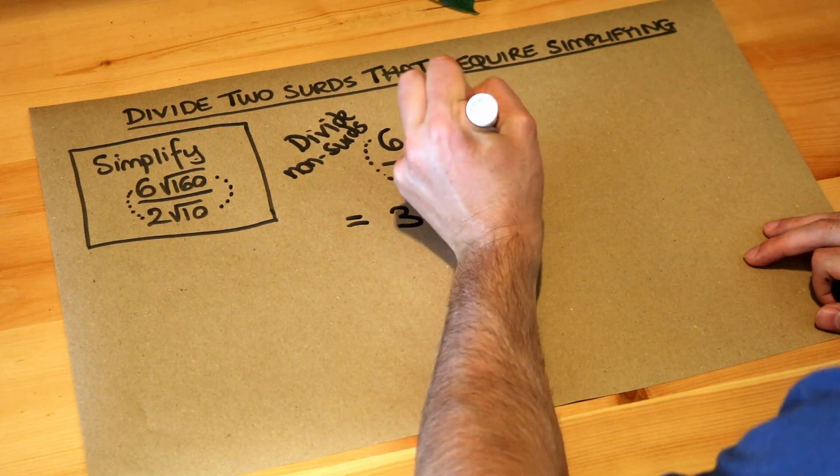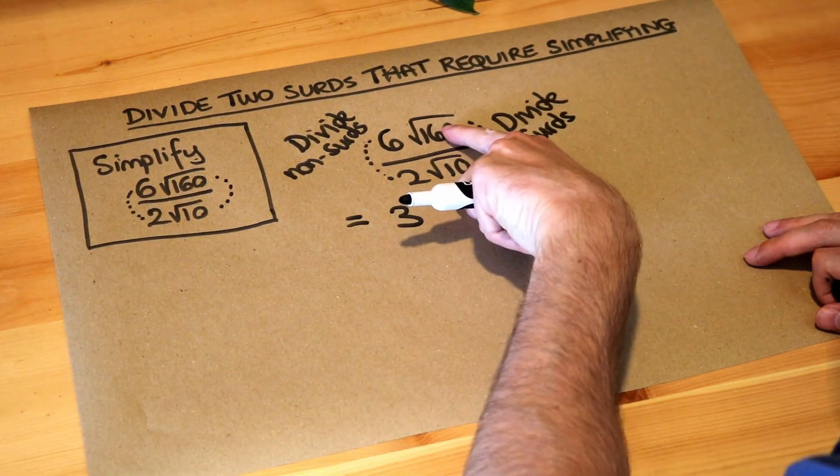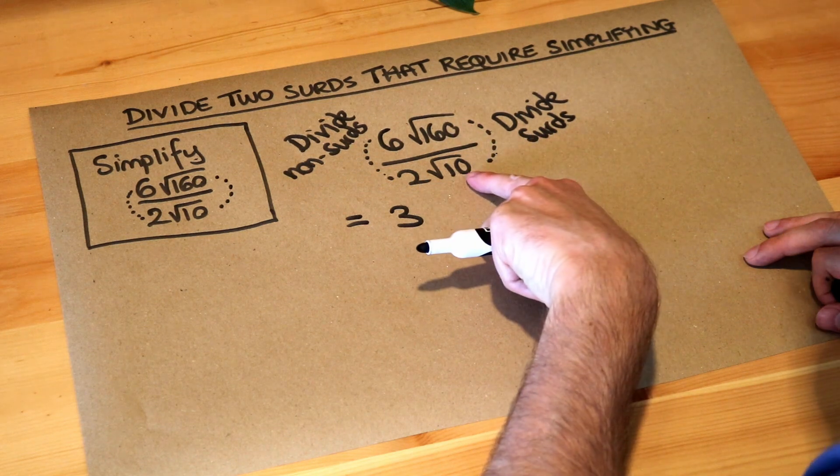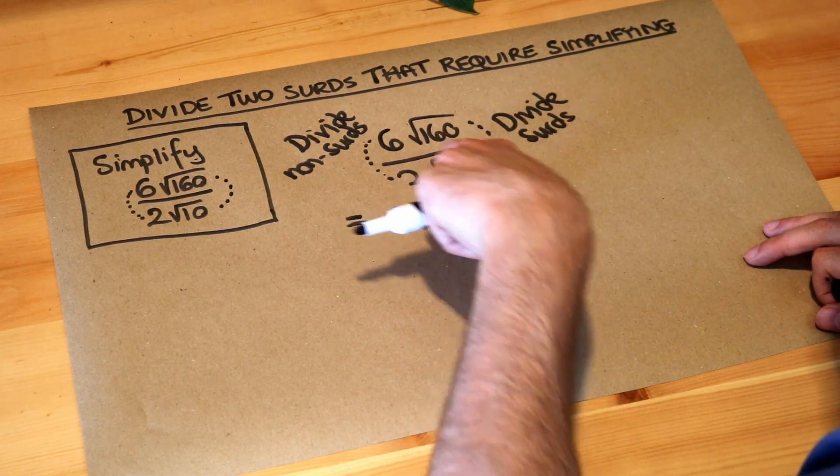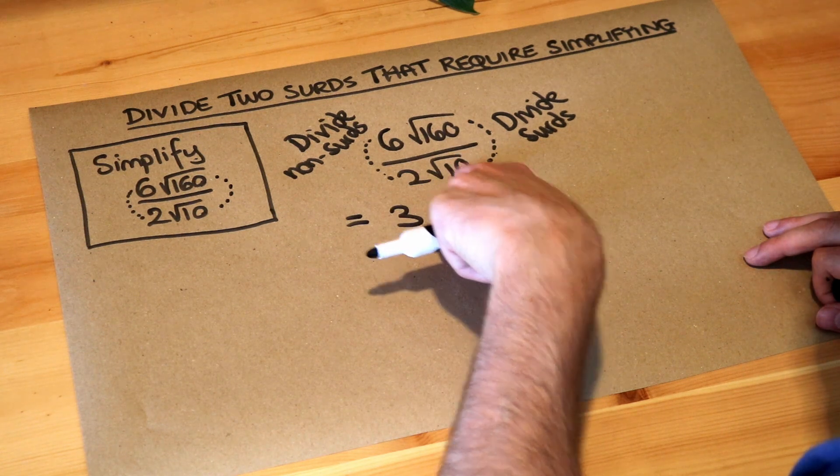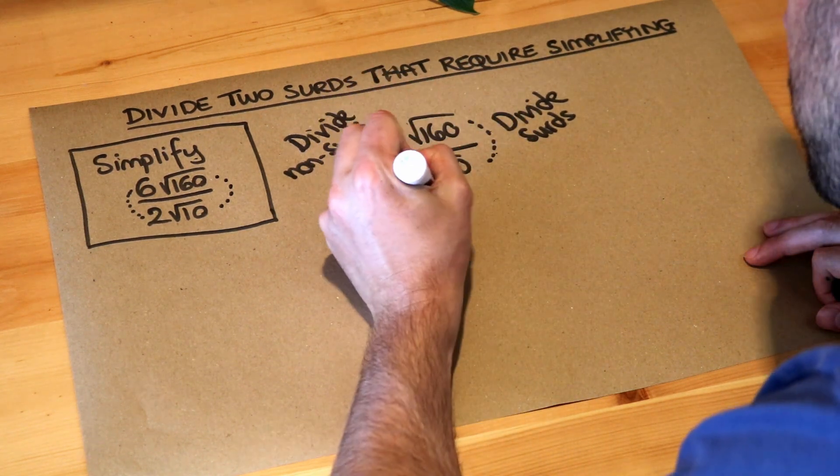And we can divide the surds. So what's root 160 divided by root 10? We just divide these numbers, 160 over 10 is 16, but we keep the square root so it's root 16.